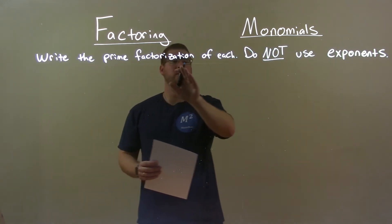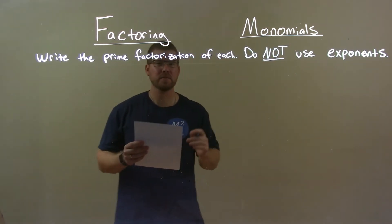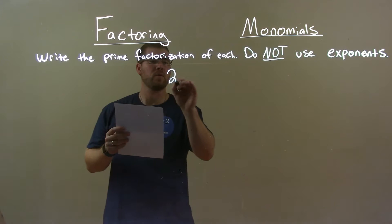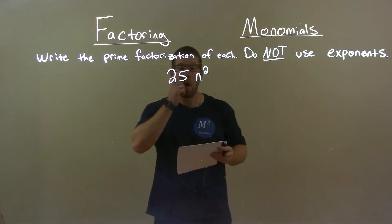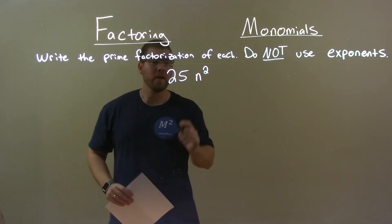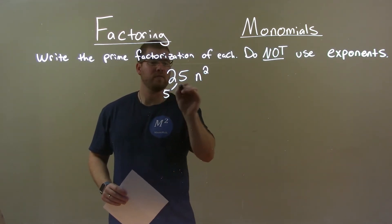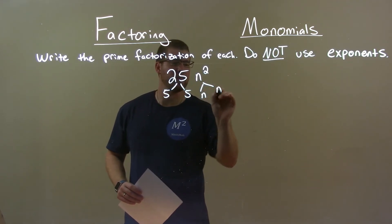We're going to write the prime factorization of each. Do not use exponents. So, if I was given this number, 25n squared, okay? Well, we need to break down the 25 and the n squared. 25, we know, is 5 times 5. And n squared is n times n.